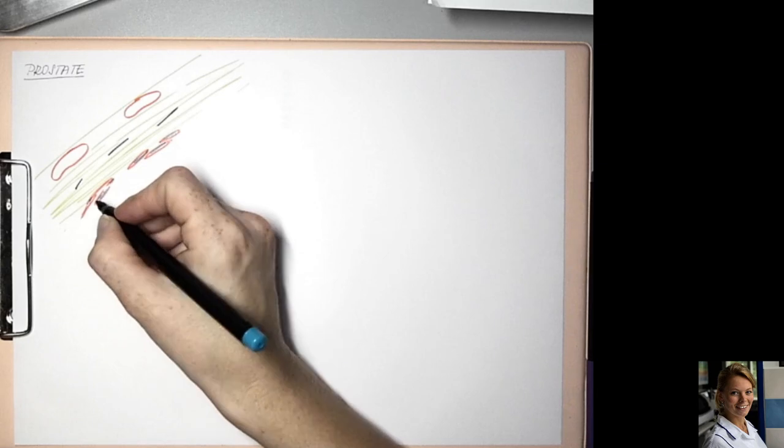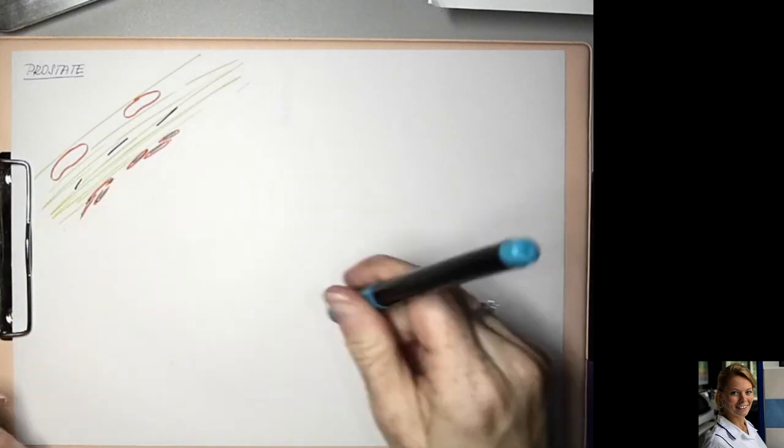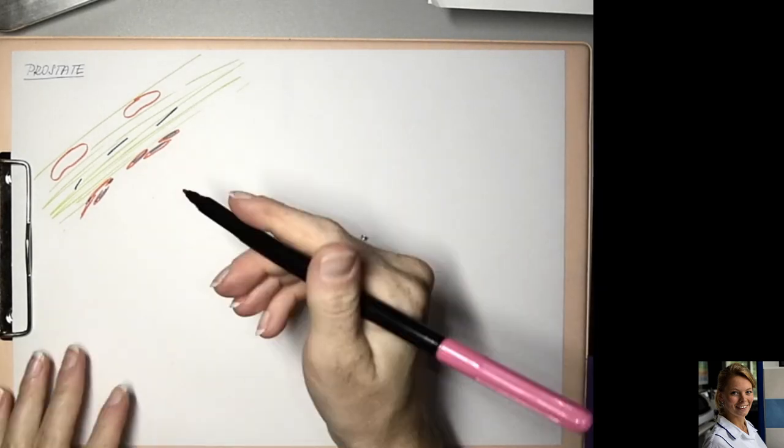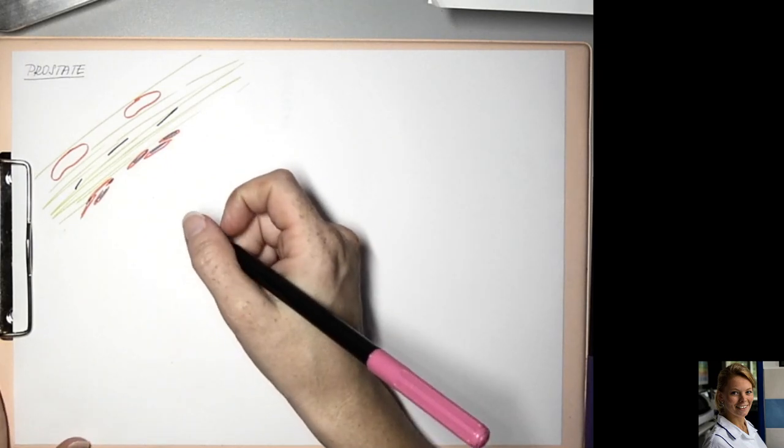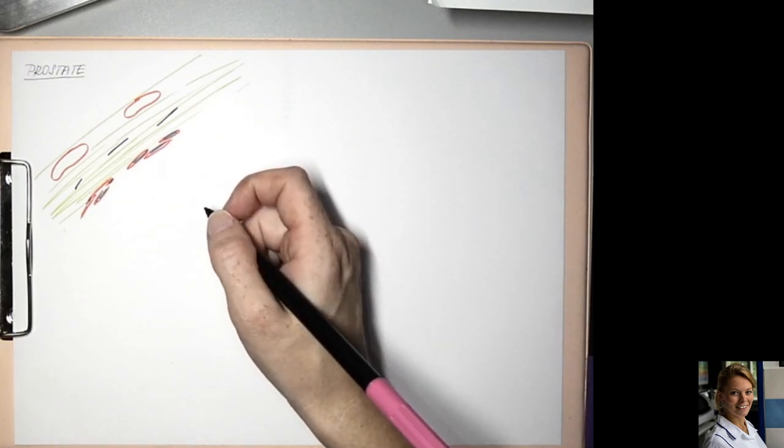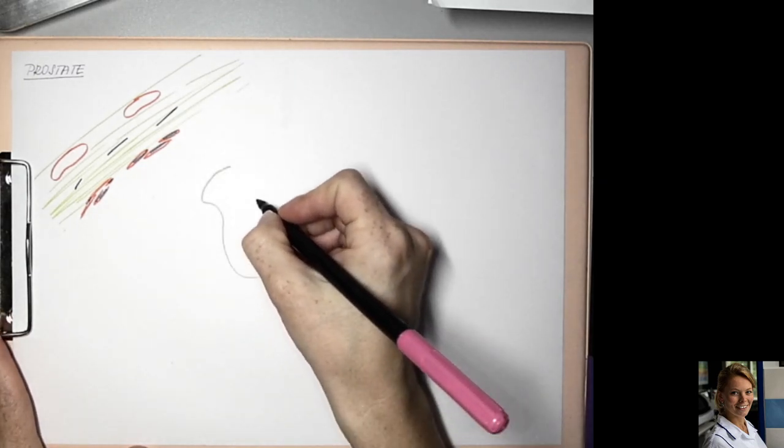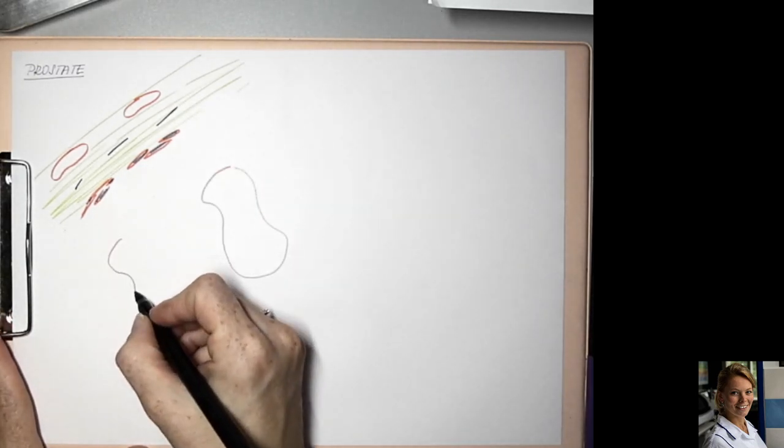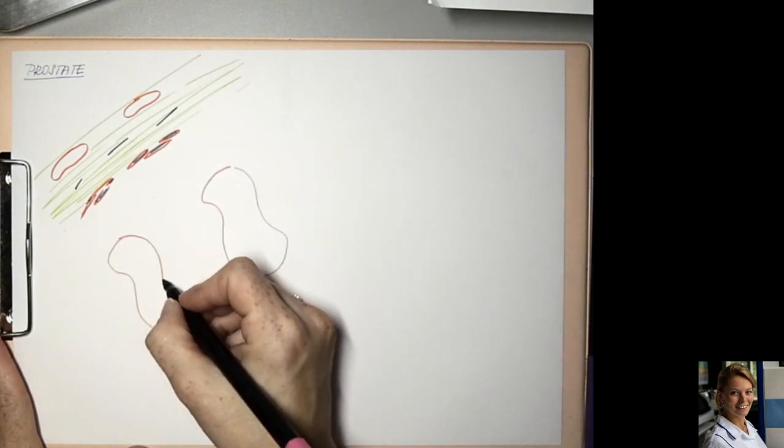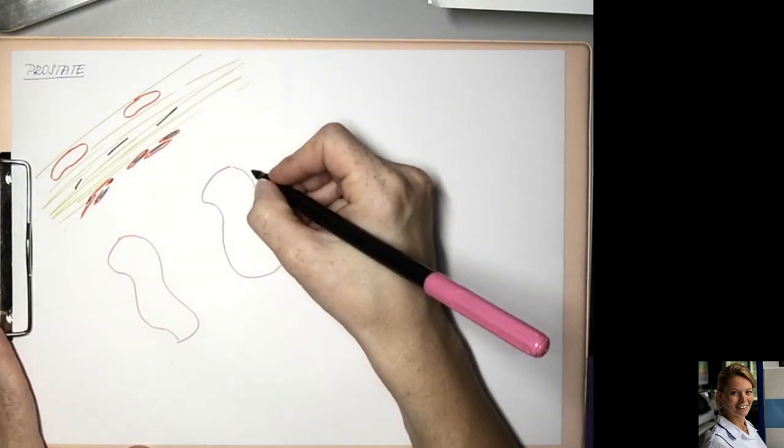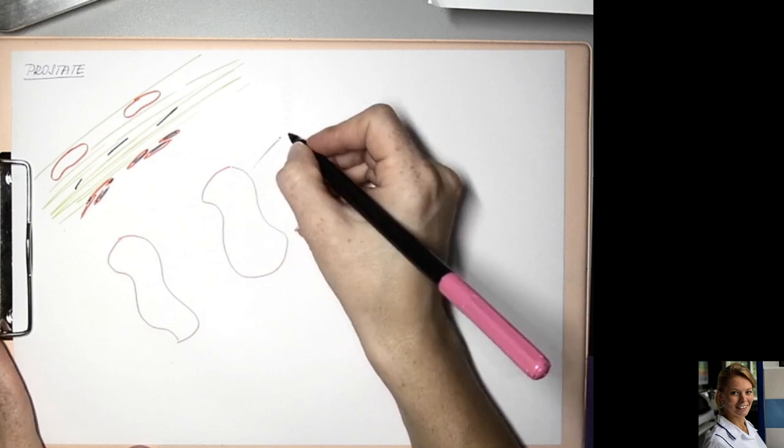So this is a fibrous capsule and in the prostate there are branched tubular glands which are lined by a single layer of columnar cells.